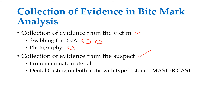Photography is highly useful for fresh bite marks. Castings can be taken from victims in rare conditions. From the suspect, bite mark samples can be taken from inanimate materials like cheese, soap, fruit, or vegetables — apple is a very good source to determine bite mark pattern. A dental casting of both arches using type 2 stone, called master cast, can be obtained from the suspect with complete authorization.